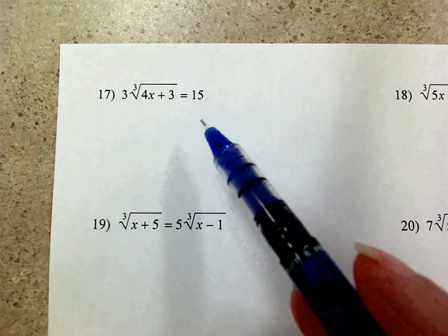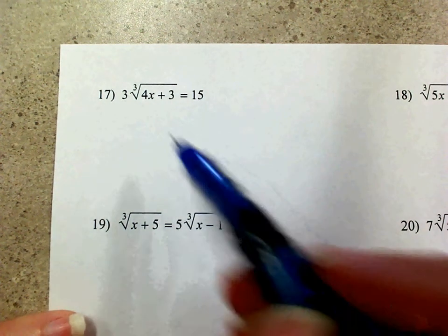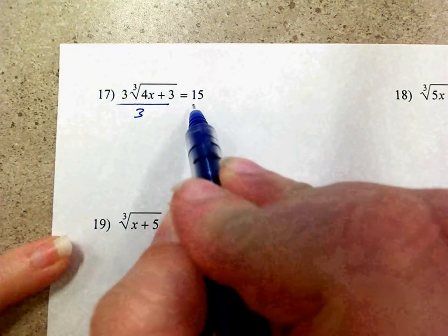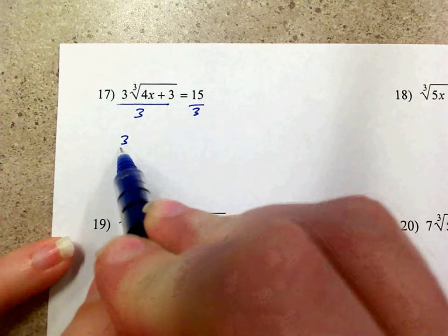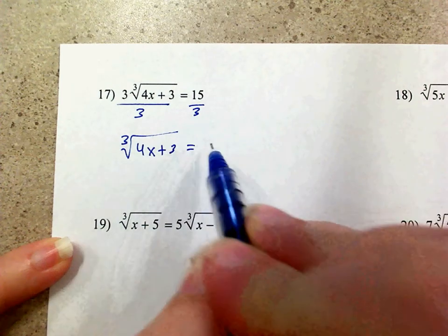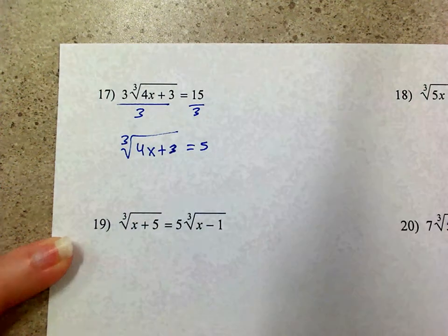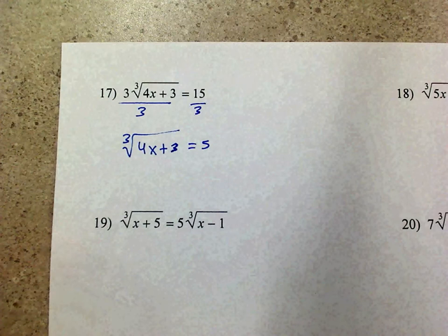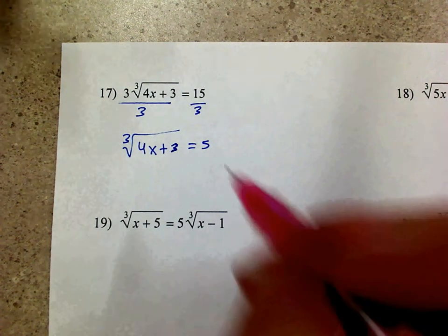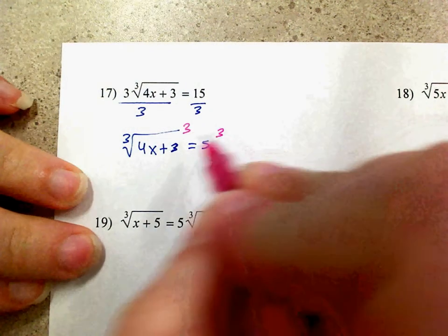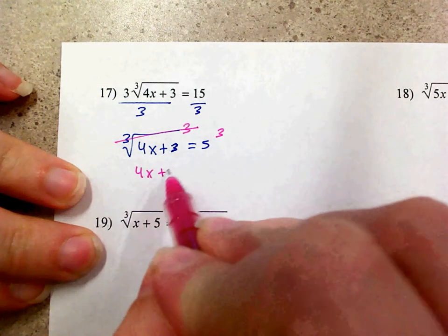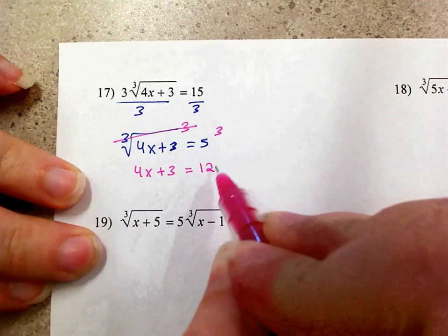When solving number 17, the first thing I want to do is get the cubed root alone, so we're going to divide both sides by 3. So I've got the cubed root of 4x plus 3 equals 5. The way we get rid of a cubed root is to cube both sides. I'm going to cube this side, cube that side, and those cancel out, and I'm left with 4x plus 3 equals 125.